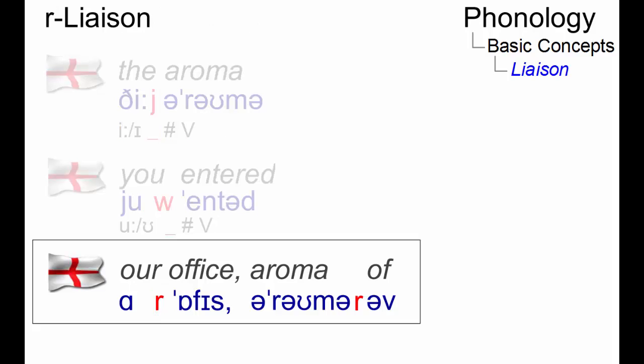In present-day English, liaison on a phonemic level is mostly associated with the use of R in this context.